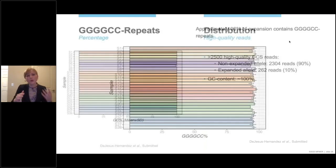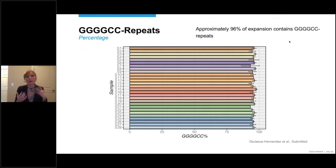We then wondered, what about the expansion itself, the GGGGCC? Is that very common? And the answer is yes, it is. Because in this bar graph, again, we're showing every individual, but the bars denote the GGGGCC percentage. And it's not 100%, but it's pretty close. It's approximately 96%, again, suggesting that the expansion is fairly pure.